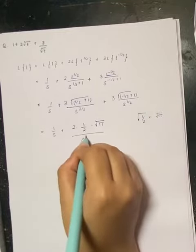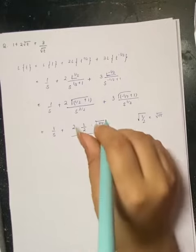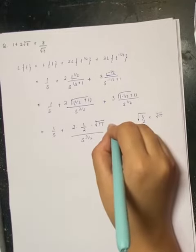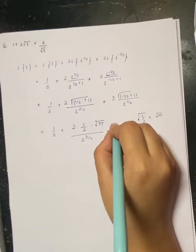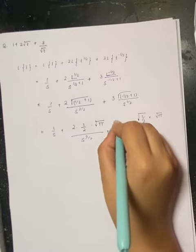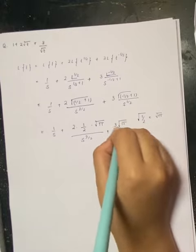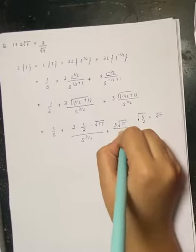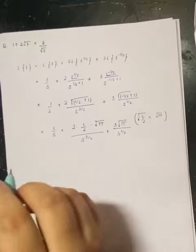So 2 by s to the power 3 by 2 times root pi. So this is 1 by s to the power 3 by 2 into root pi by s to the power 1 by 2 plus 3 into root pi.